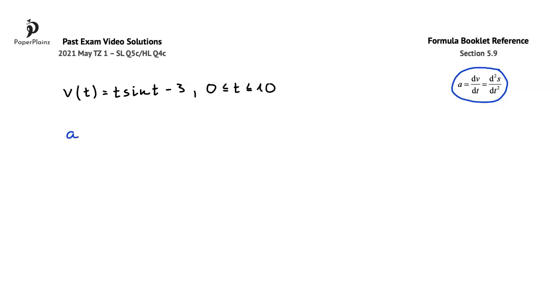So when we are looking for the acceleration at t equals 7, we can find the value of the derivative of the velocity function at t equals 7. Since this is a paper 2 question, from here on we'll use our calculator.